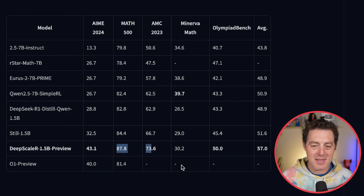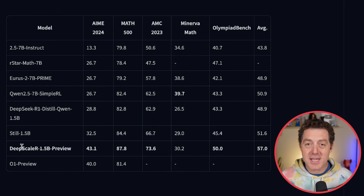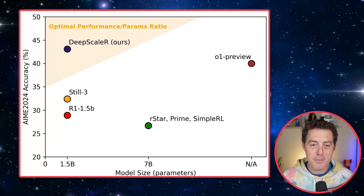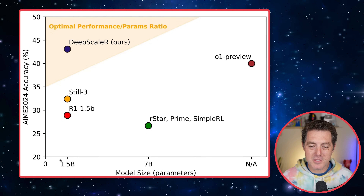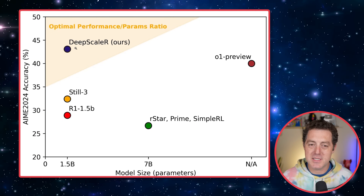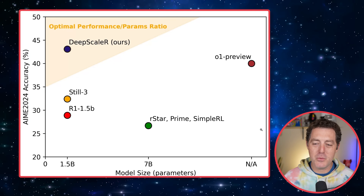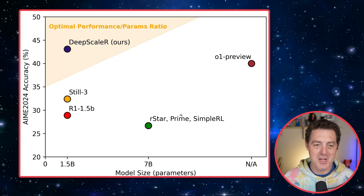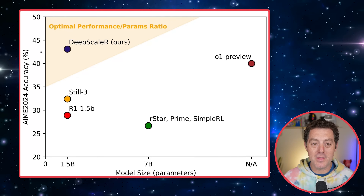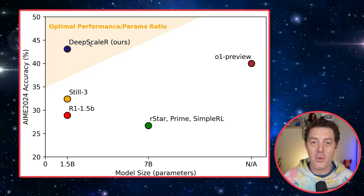Math 500 — same thing, basically across the board. This is the model size along the X-axis on the bottom — 1.5B parameters. We can see DeepScaler right there in purple. All the way on the other side is O1 Preview; we don't know the size, but it's large. Then we have accuracy on the Y-axis, and clearly, in purple, DeepScaler wins. Really impressive.